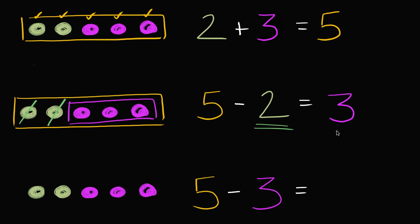Five minus two is three, and it works the other way around. If I start with five and I were to take away three, so if I subtract one, two, three, what am I left with? Well, I'm left with one, two. I am left with two.